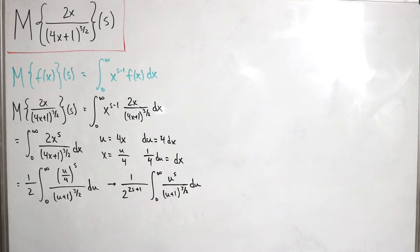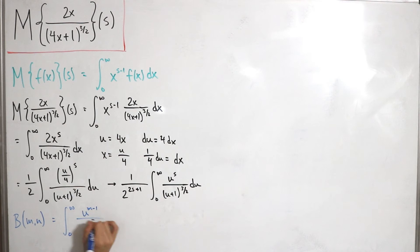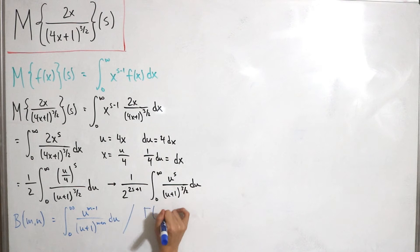Now let's introduce the beta function. For inputs m and n, the integral representation is: from zero to infinity of u to the power (m minus 1) divided by (u + 1) to the power (m + n), du. In other words, this equals gamma(m) times gamma(n) divided by gamma(m + n).